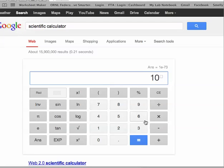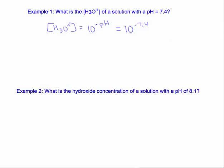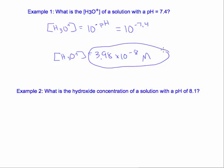So you say 10, negative 7.4 equals 3.98 times 10 to the negative 8. So our hydronium ion concentration is 3.98 times 10 to the negative 8. And this is a measurement, so you still must put units on it. And because it's a concentration, the units are molarity.